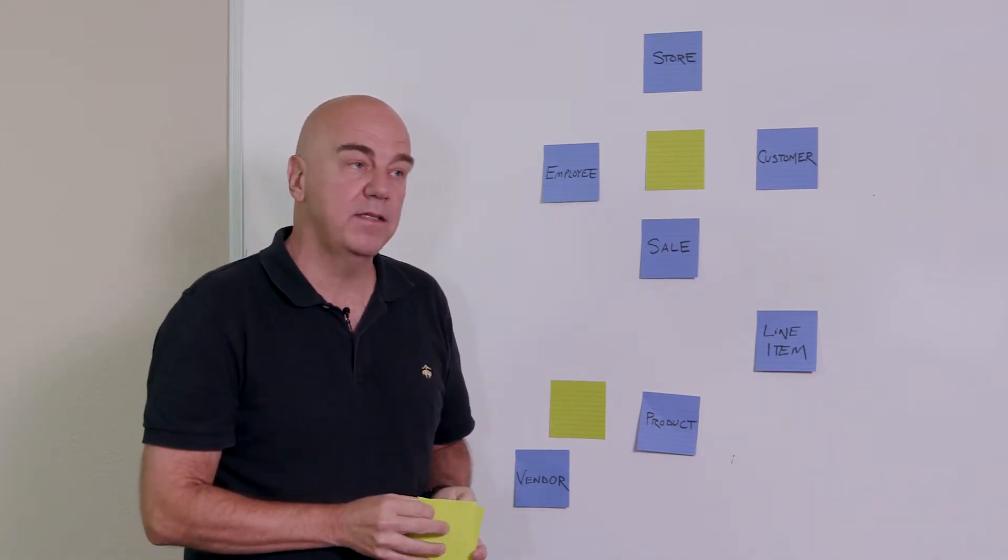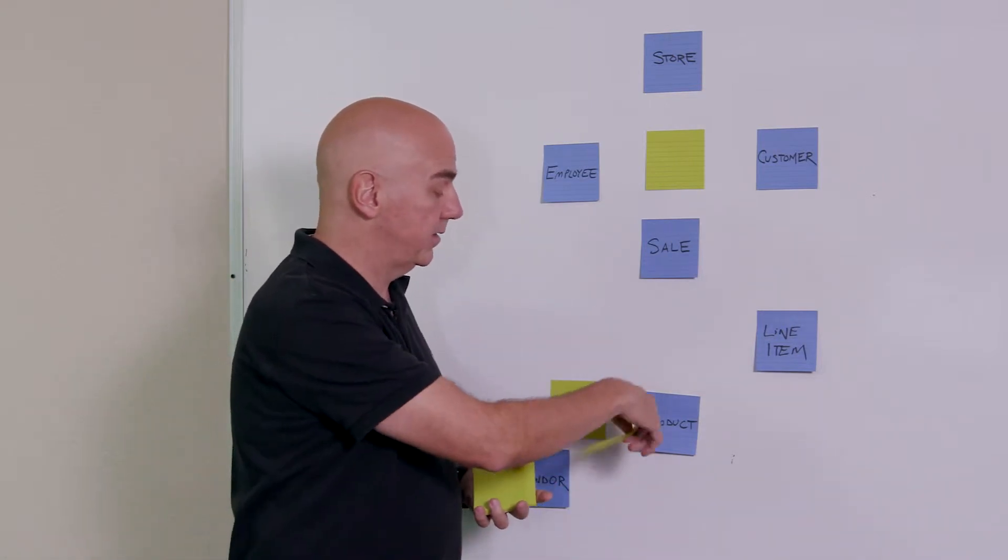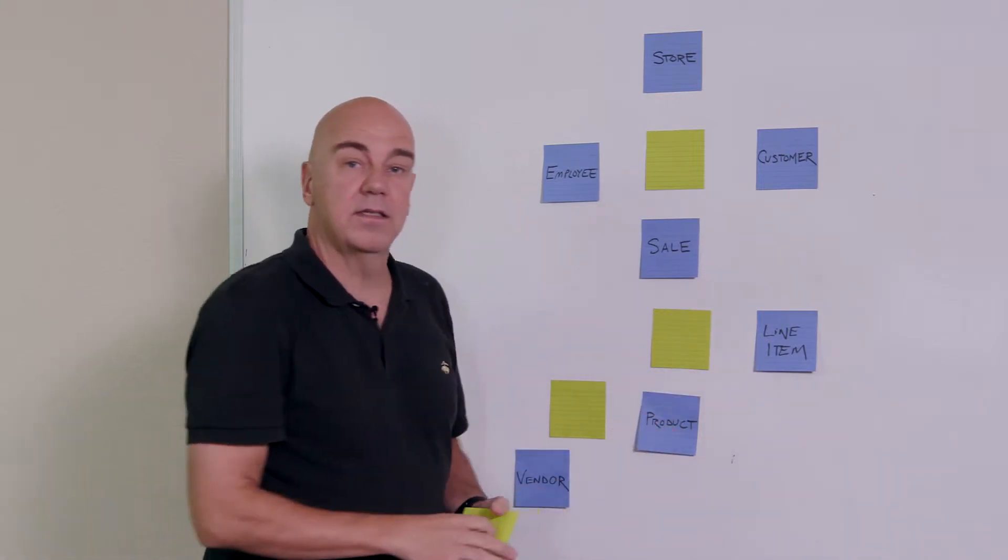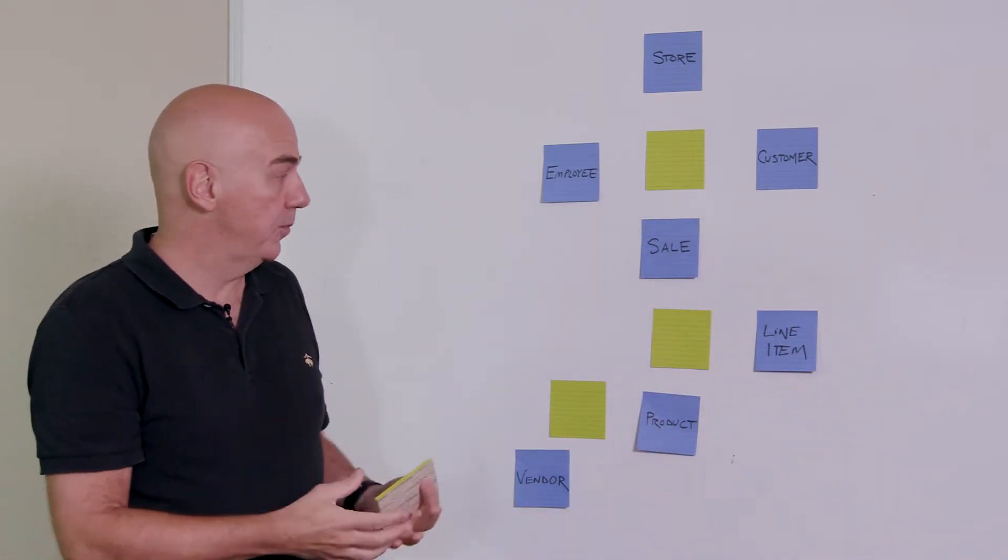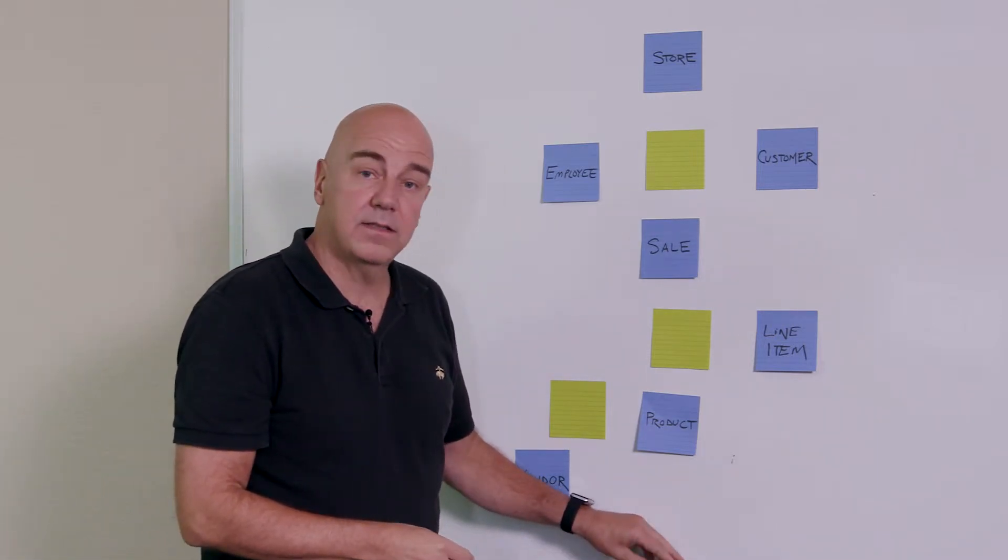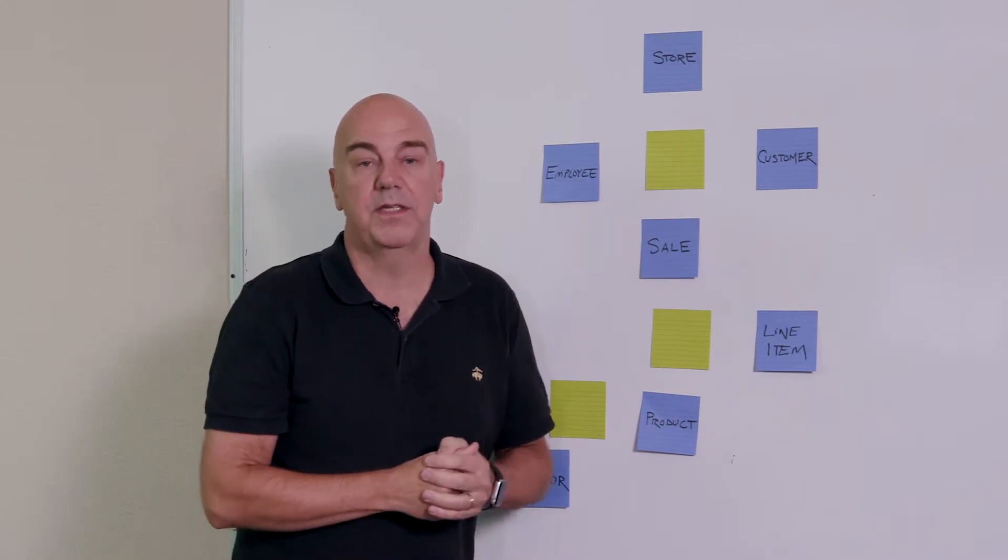And then I have a list of maybe 10, 20, 50, 100 different customer products that were purchased on the sale. And each one of those products becomes a line item. And so this is the natural business relationships. So here we've identified three in this case, combinations. And now let's go back to the presentation and take a look.